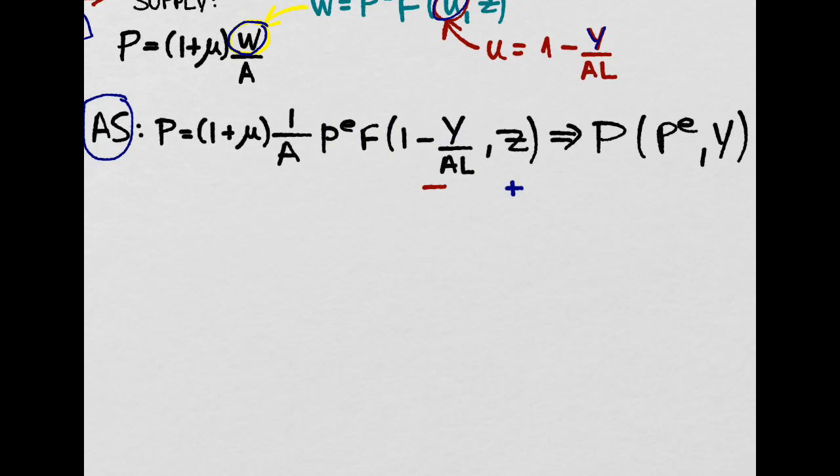Because everything else, the markup, productivity, Z, remain constant, are given exogenously.